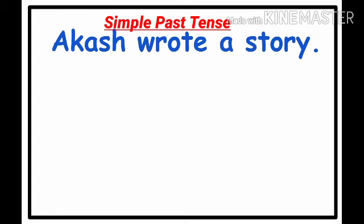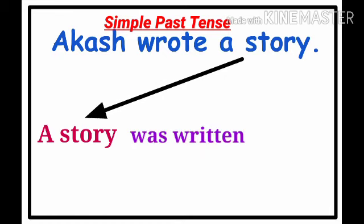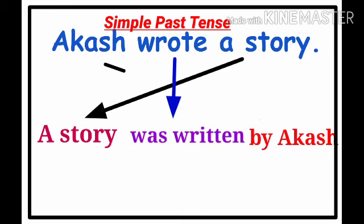As you know, we interchange the subject and object of the sentence. So we start with 'a story': 'A story was written by Akash.' Recognize the change that happened — 'wrote' changes to 'was written.' Remember, in simple present tense 'write' changes to 'is written,' but in simple past 'wrote' changes to 'was written.'